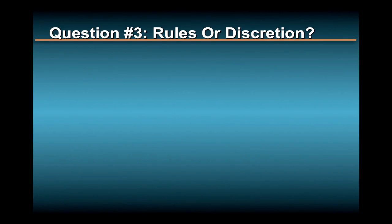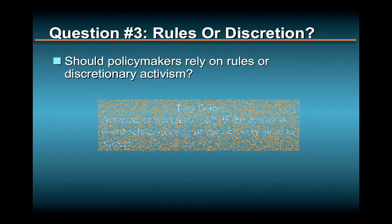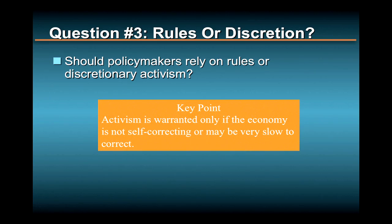Now, let's turn to a third major area of disagreement among the varying schools of macroeconomics: the use of policy rules or discretion. This discussion follows naturally from the debates over the causes of macroeconomic instability, whether such instability is self-correcting, and how long it takes for the self-correction to take place.